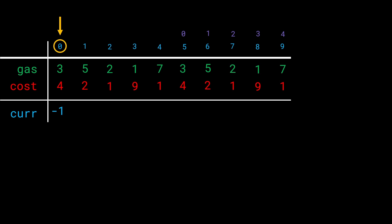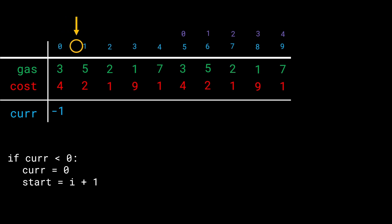Here's the key if-condition: if current is less than zero, make a full reset. This station won't work out — it gives a negative value. So we set current to zero and reset start to i + 1. We move on to index 1 as the starting position.